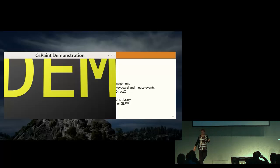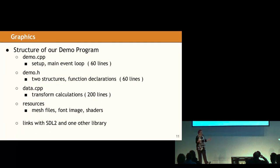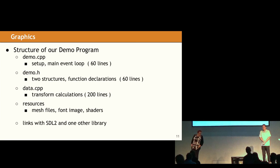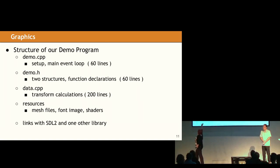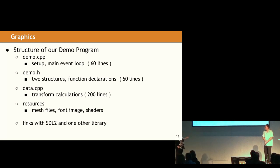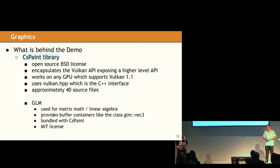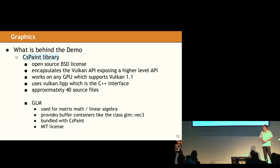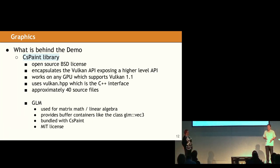So let's talk about how we're doing this, because that's what's really interesting. The demo program actually isn't that big. It's a CPP file — 60 lines. We have a header file. It's rather small. And we said it links with SDL2. We have some resources, some meshes we put in there. What's behind it is CS Paint. CS Paint is our graphics library. It's available under an open source license, and what CS Paint does is encapsulate the Vulkan API and give you a higher level abstraction for working with rendering things on the GPU.